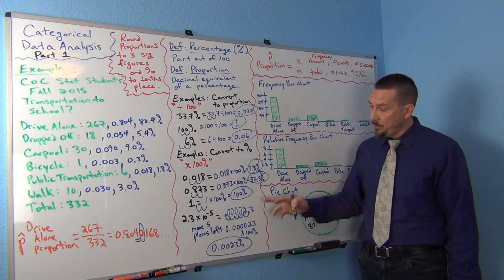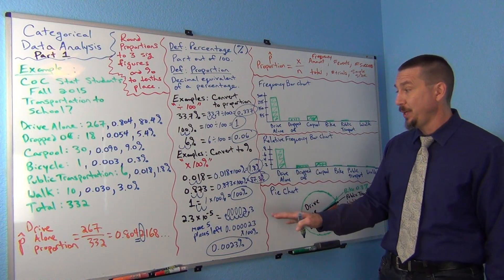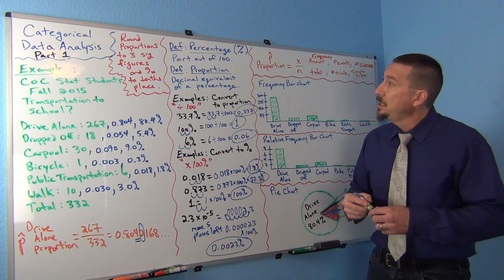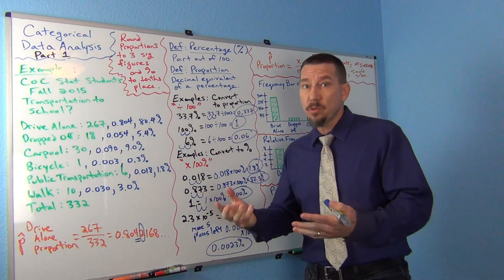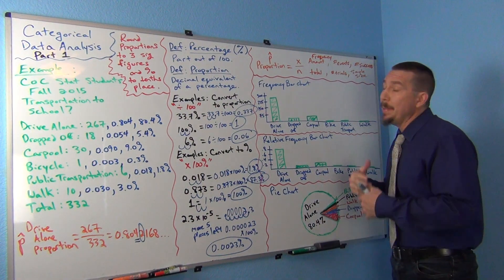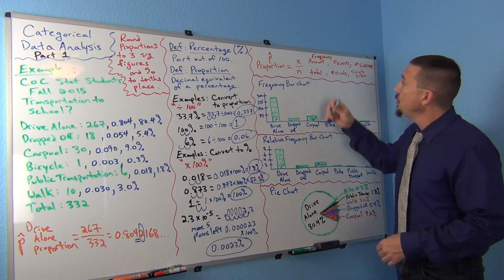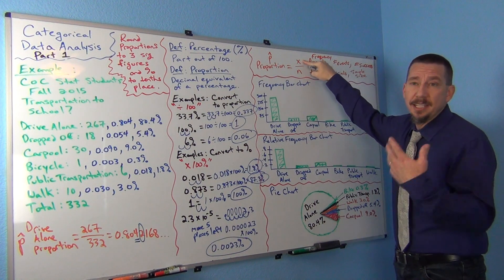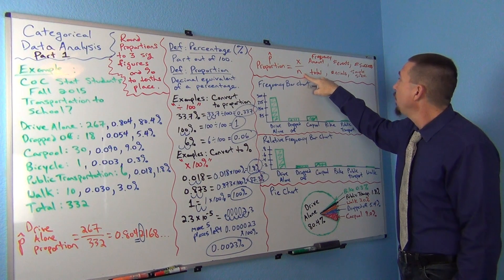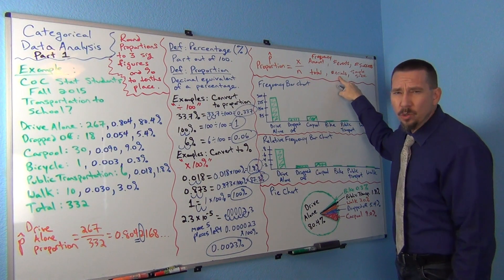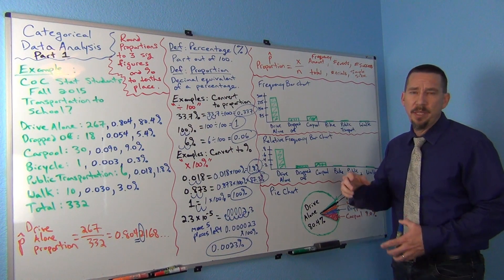You should be comfortable converting back and forth, and don't forget to put the percent symbol on there — 0.0023% is very different from 0.0023; they're not the same thing. Usually when you get categorical data, one of the first things you want to know is the counts or the frequencies, sometimes called the amount or the number of successes. That's denoted by X — the number of people or objects that had a certain characteristic. Then you have N, which is the total sample size, also called total frequency, total number of trials, or sample size.